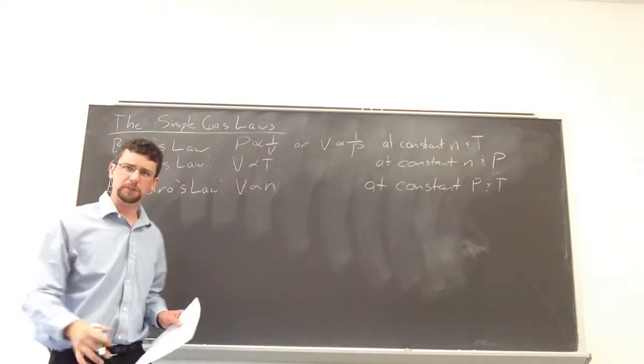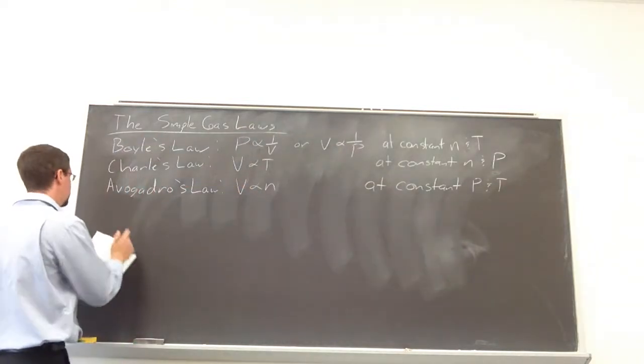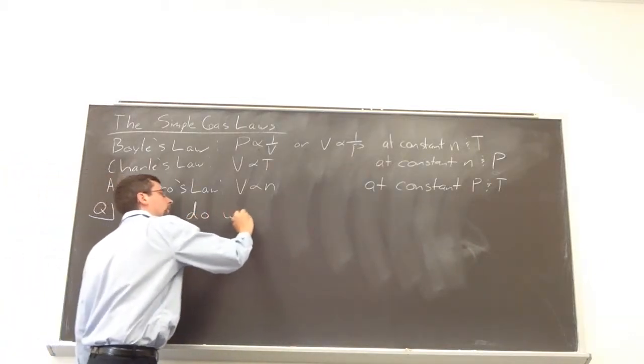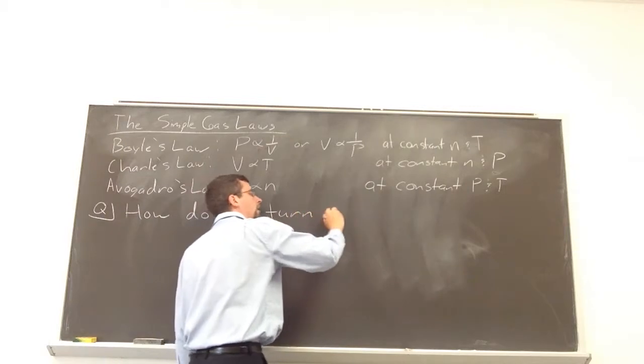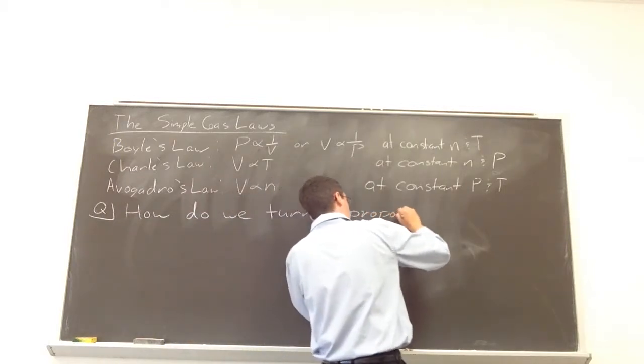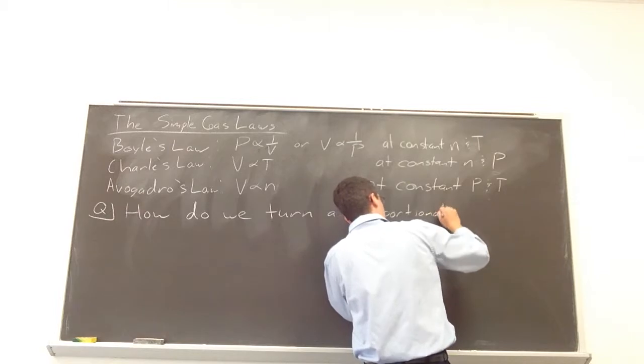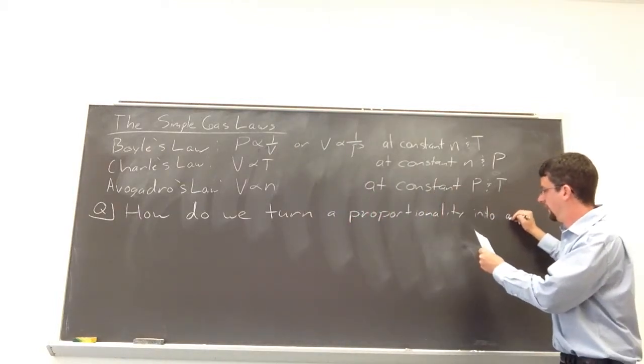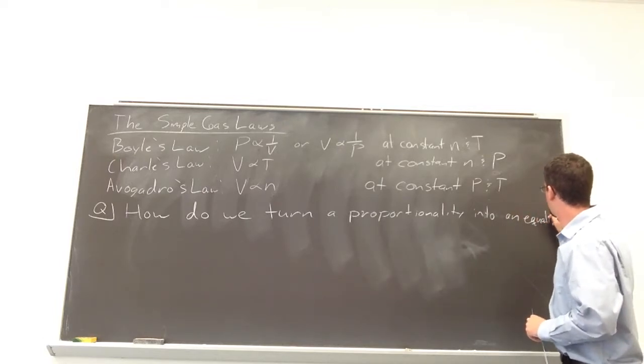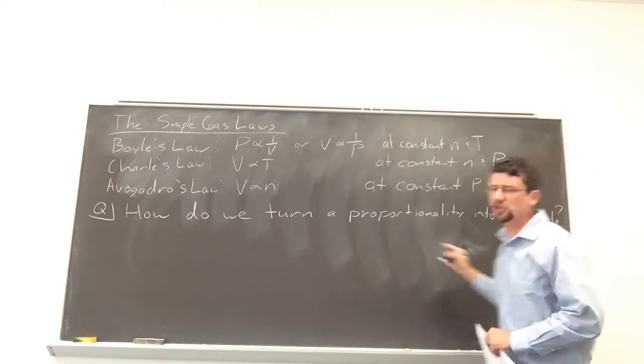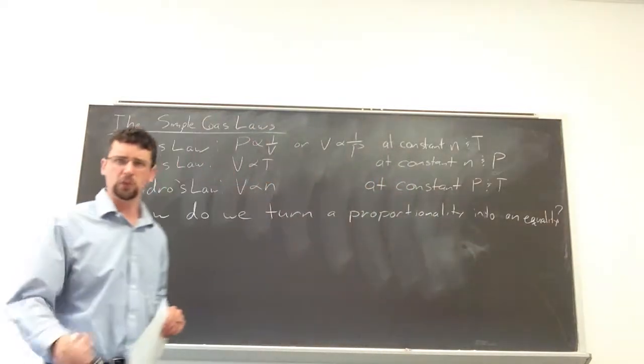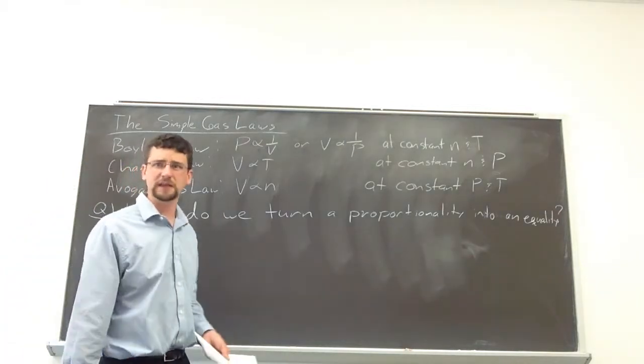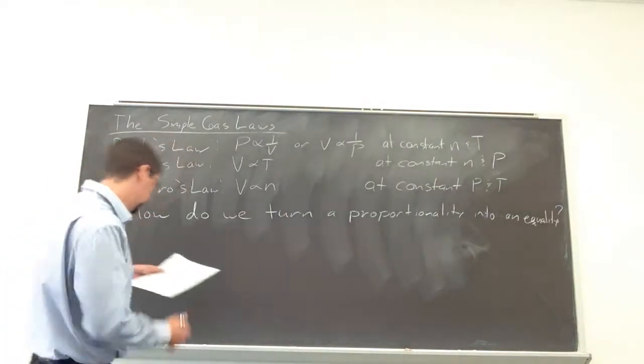Right now, we have these proportionality signs. How do we get to equal signs? So, question. How do we turn proportionality into an equality? So, we want to change that proportionality sign into an equal sign. And the way that most chemists do this is, they introduce a constant. Like plugging in a constant, bam, you have an equals.